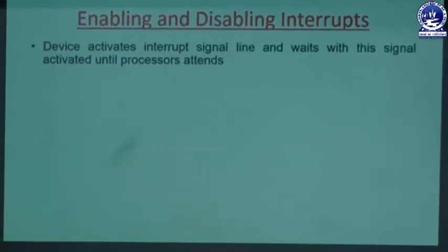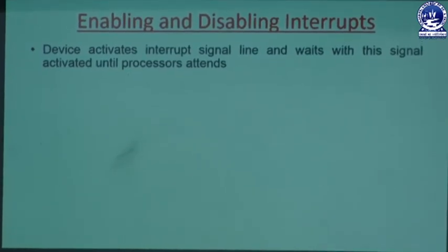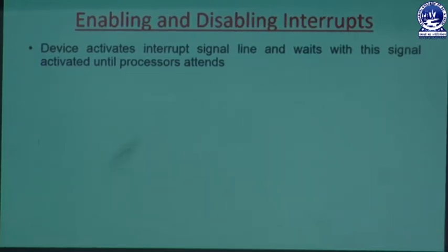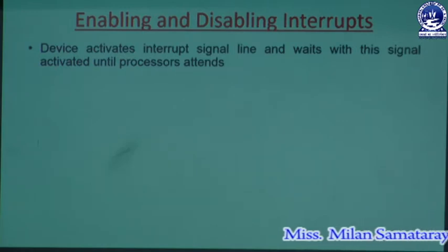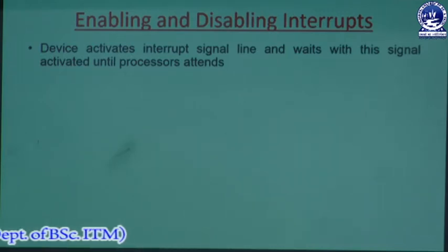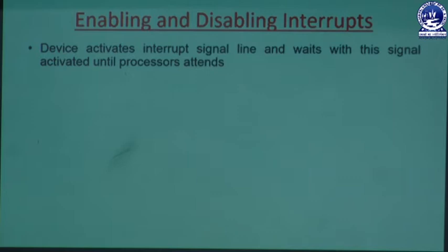So let's go to the slides. Enabling and disabling interrupts — the first point: a device activates the interrupt signal line and waits with this signal activated until the processor attends. Each device which wants to interrupt in between the process execution first sends the interrupt signal into the computer system and has to wait until the processor receives that request generated by the device.